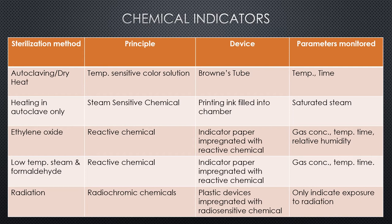Here are some examples of chemical indicators for monitoring the sterilization process. First is autoclaving or use of dry heat. The basic principle uses a temperature-sensitive color solution. The device is a bronze tube — sealed tubes partly filled with a solution that changes color at elevated temperature. The rate of color change in proportion to temperature is measured, and the parameters monitored are temperature and time. When considering heating in an autoclave only, a steam-sensitive chemical is used.